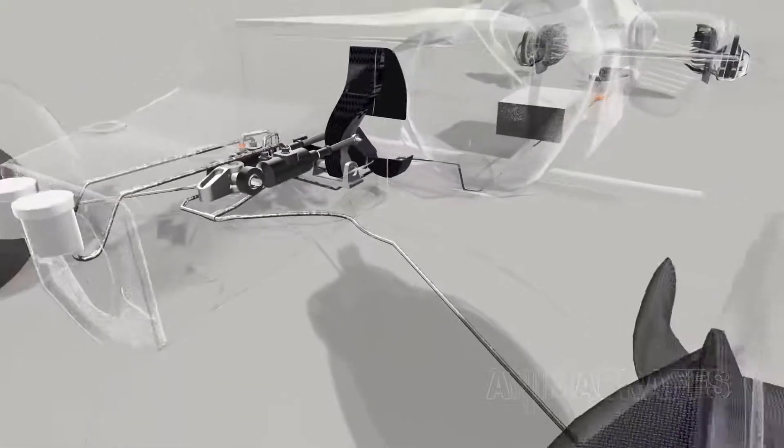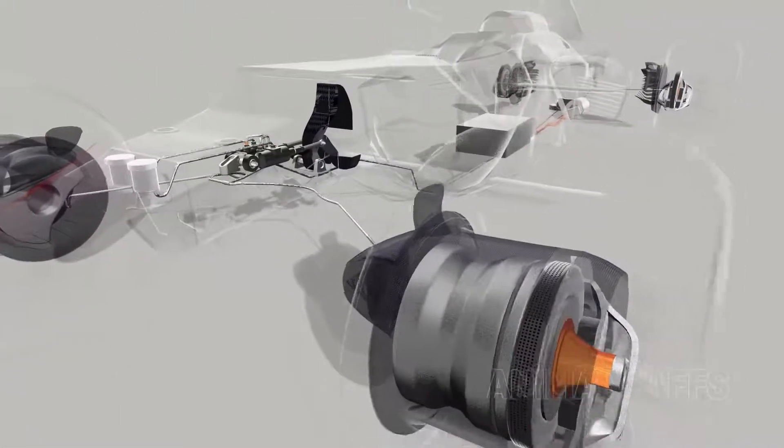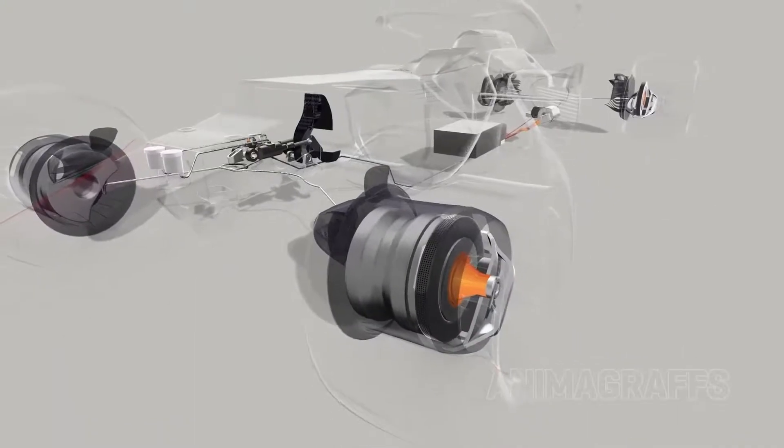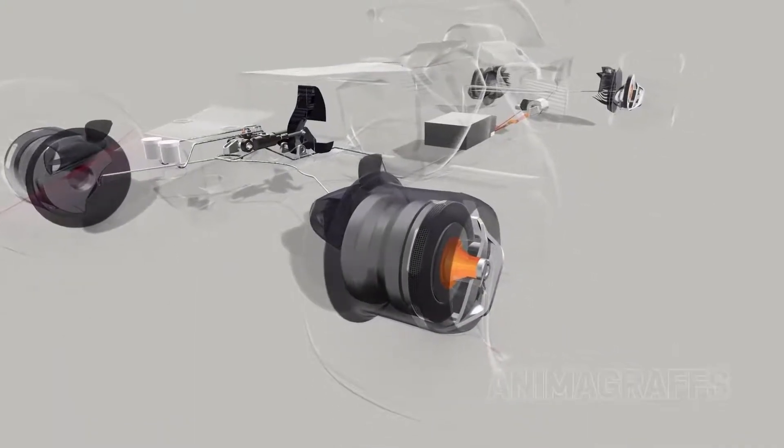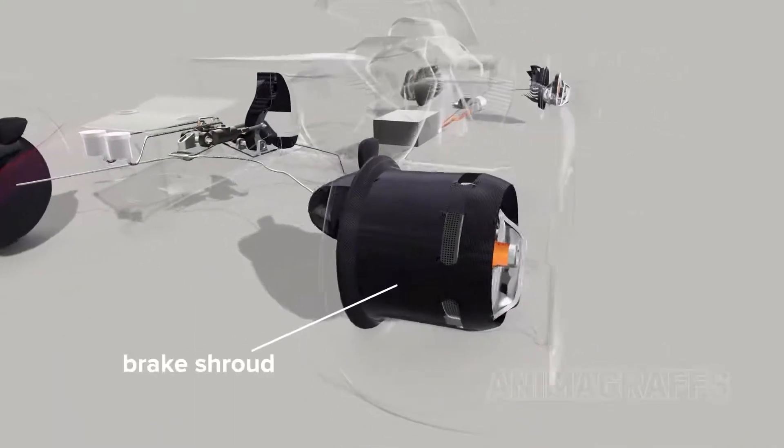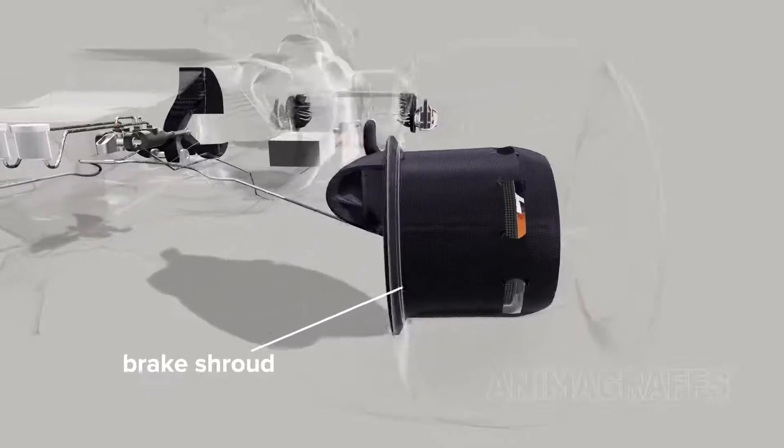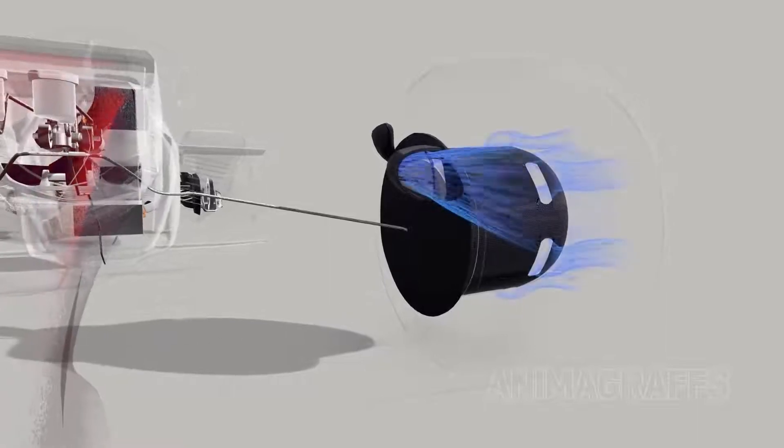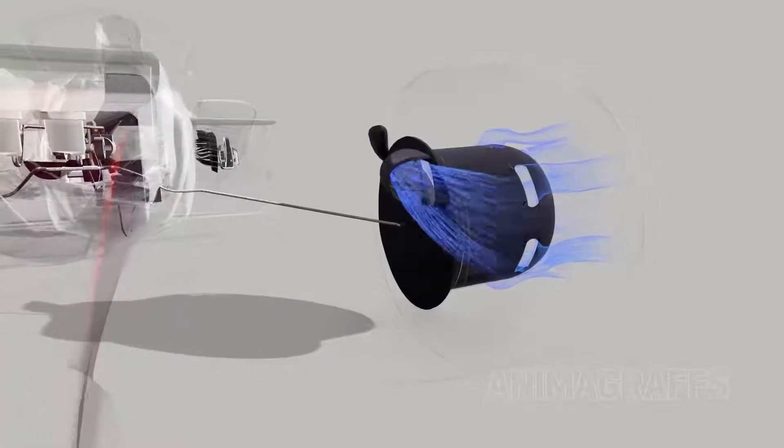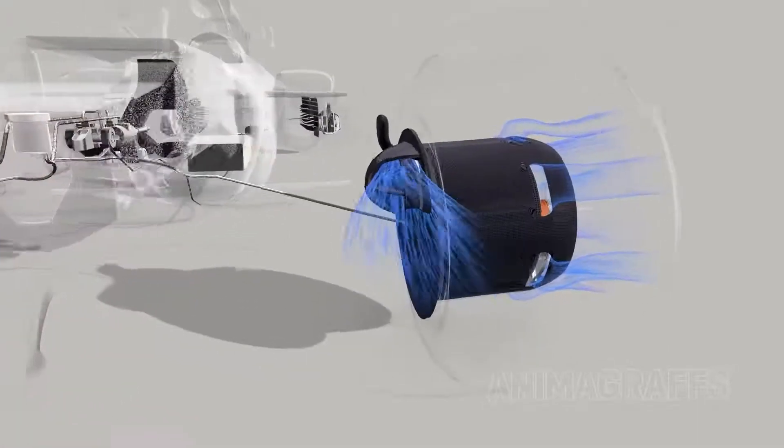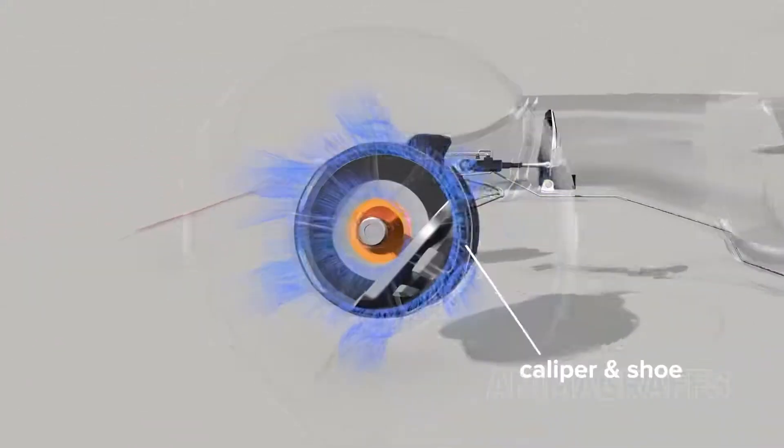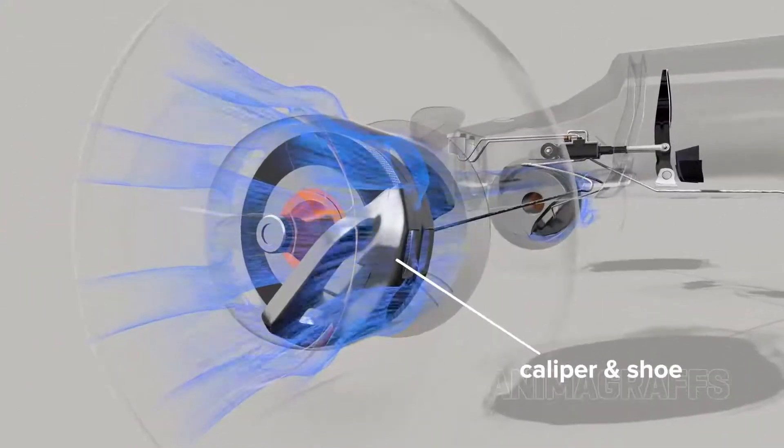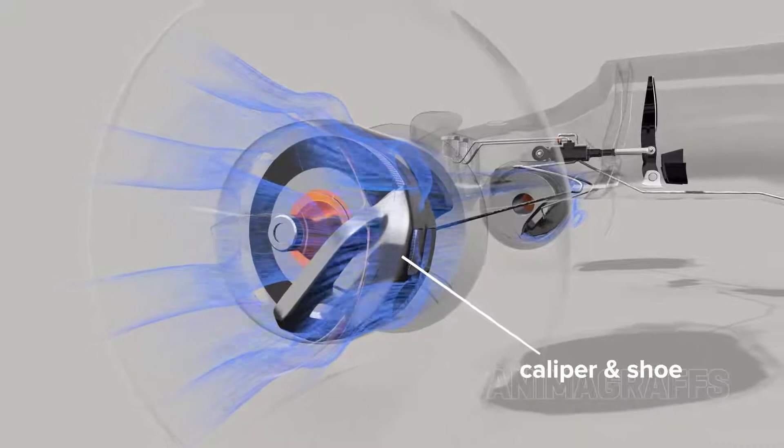Brake lines snake through suspension elements to the brake caliper and shoe assembly. Intense brake heat must be precisely managed, so the entire inner wheel assembly is covered by a ducted carbon fiber shroud. The front wing helps direct air into the brake ducts and through the inner wheel for cooling.